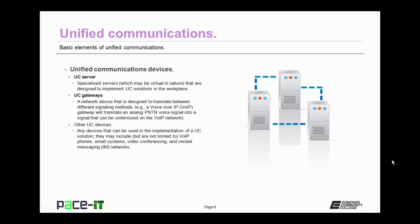Now let's talk about some unified communication devices. First up is the UC server. These are specialized servers, quite often virtual in nature, that are designed to implement unified communication solutions in the workplace. The UC servers work in conjunction with UC gateways. A UC gateway is a network device designed to translate between different signaling methods, such as a voice over IP gateway, which translates an analog public switch telephone network voice signal into a signal that can be understood on the VoIP network.